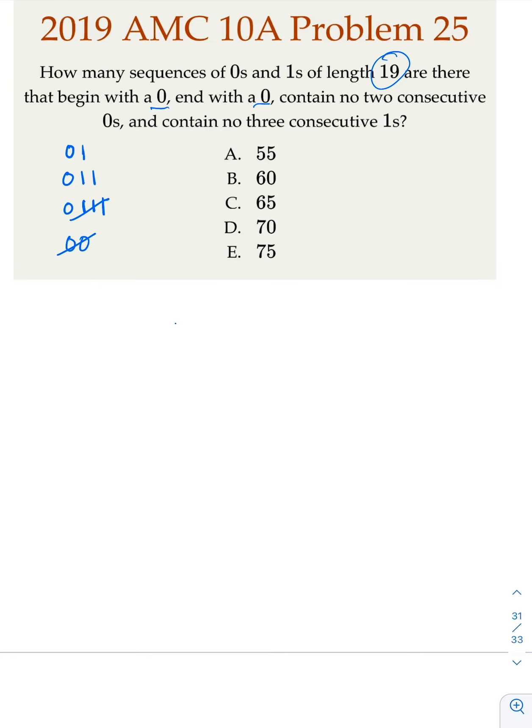So we claim that, of course, at the end, it's going to be ending with 0. This is the 19th character. Before that, you're going to have 18 characters, but it's going to be either a token of 0-1 or 0-1-1 in different orders. So you're going to have these two tokens.